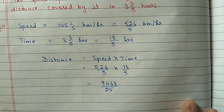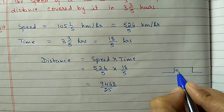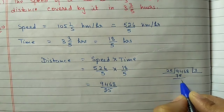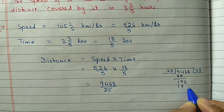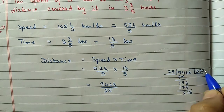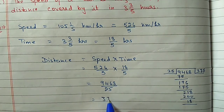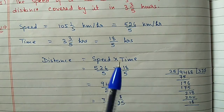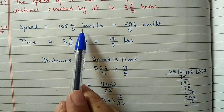We can divide 9468 by 25 and change it into a mixed fraction. Doing the division: 25 goes 3 times into 94 giving 75, remainder 19; bring down 6 to get 196, goes 7 times; bring down 8, goes 8 times giving 200, remainder 18. So the answer is 378 and 18/25. The unit is kilometer, since speed is in km/hr and time is in hours.